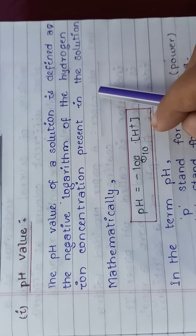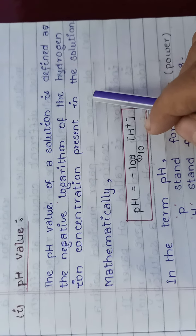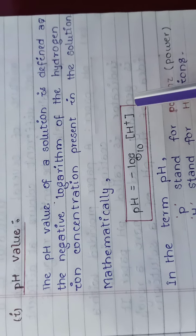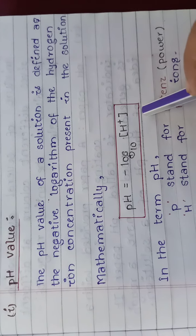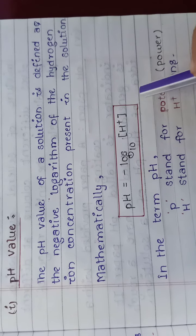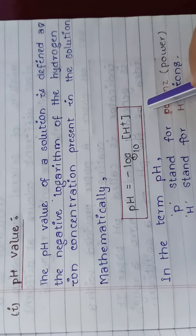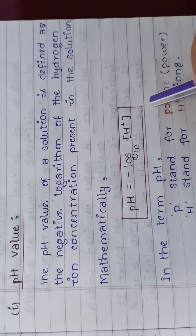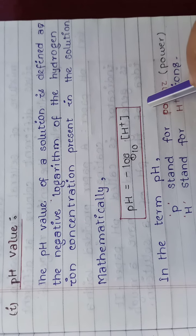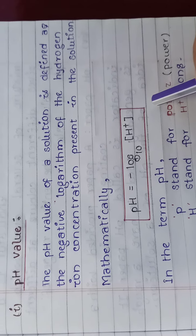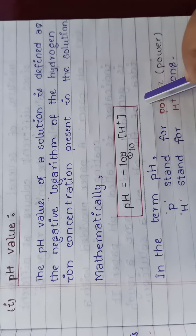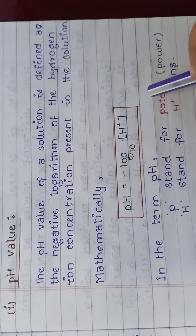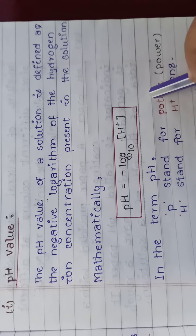So, in order to express the strength of an acid or base, we use a scale of acidity. This scale is called the pH scale, and the value which is given by this scale is called the pH value.